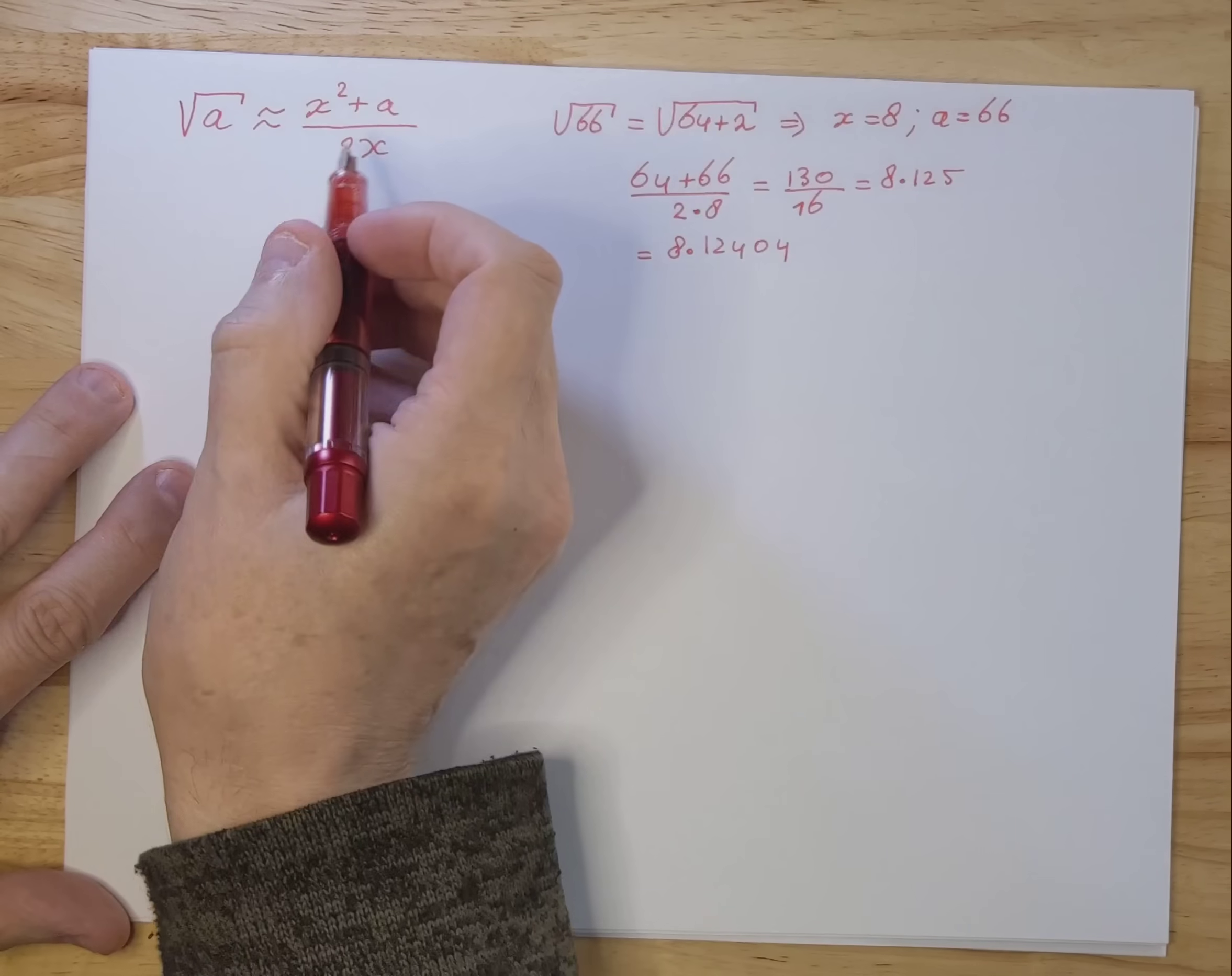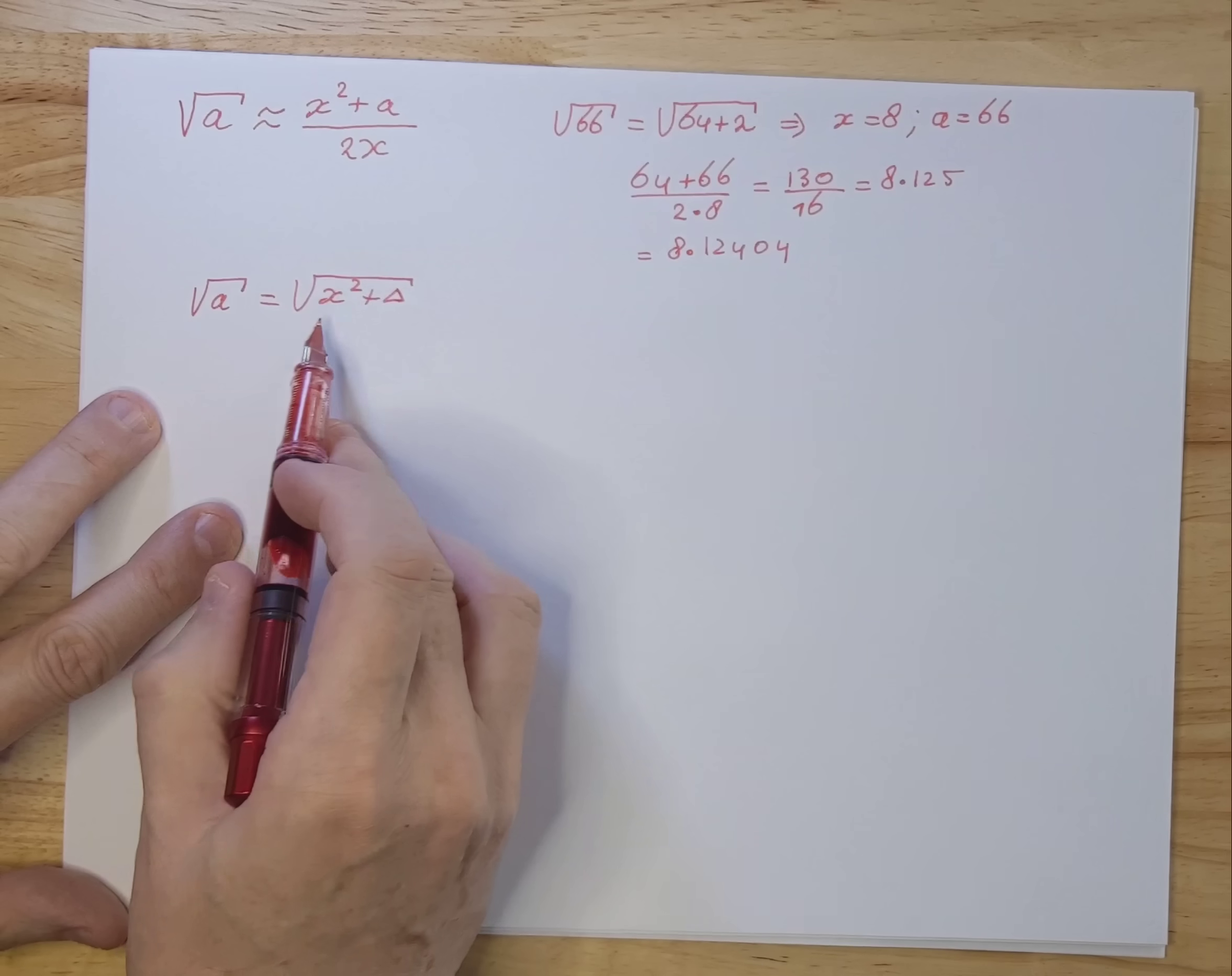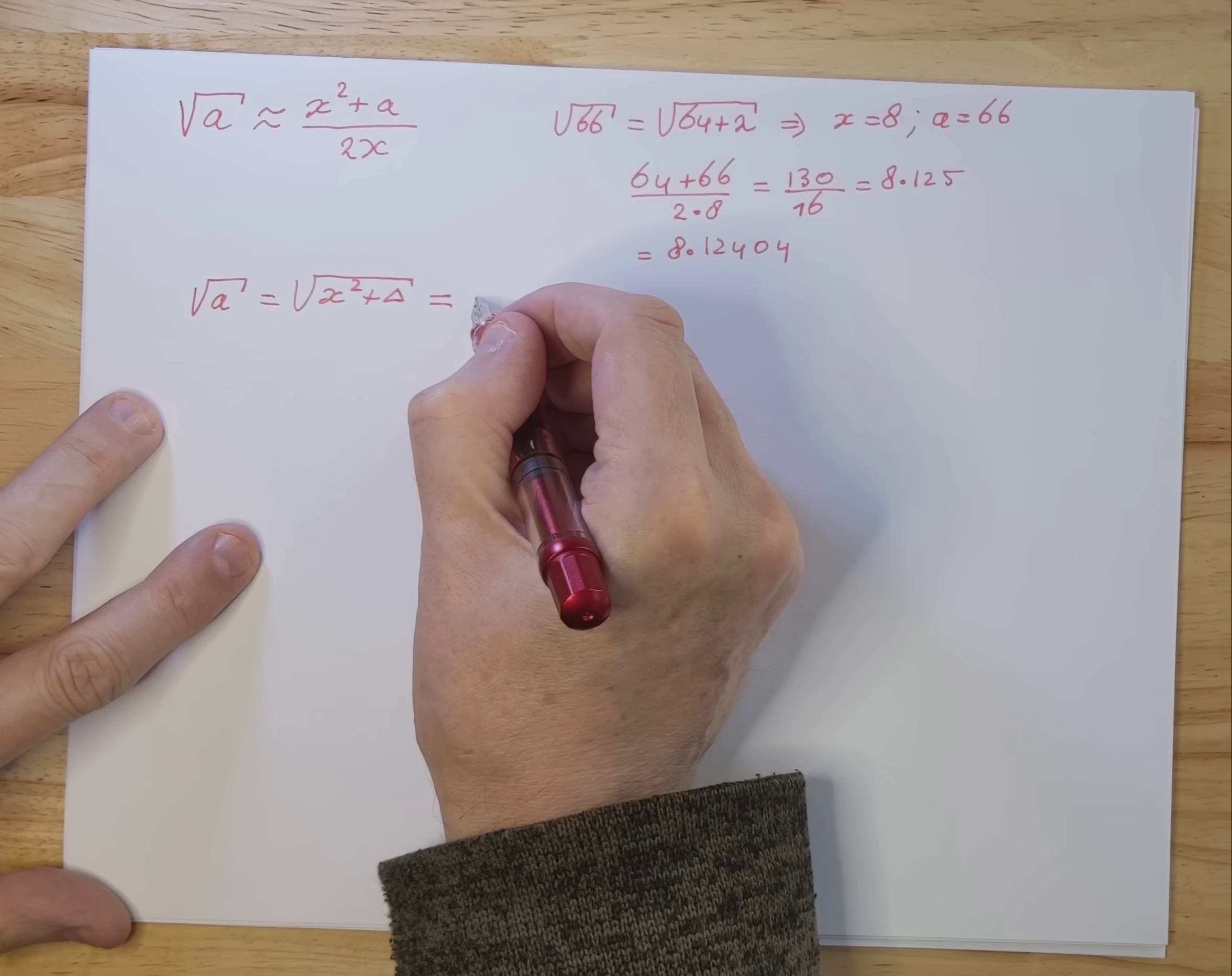We can do that in the following way. We can rewrite the square root of A in the following form. We can say I'm going to write it as x squared plus a delta. And that x squared in this case is that 64 here. So you write it in a square that you can actually take the square root of, plus whatever remains. And that whatever remains is usually relatively small. And therefore, you have the ability to develop that in a Taylor series.